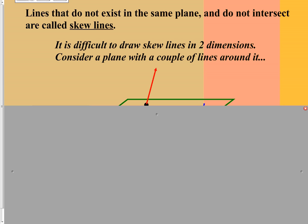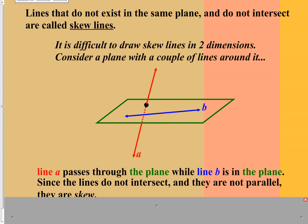If you have two lines that are not intersecting and not in the same plane, we have what we call skew lines. This term hasn't shown up very often, but it is specific and worth knowing. If they're in the same plane and don't touch, that's parallel. If they're not in the same plane and don't touch, that's skew.